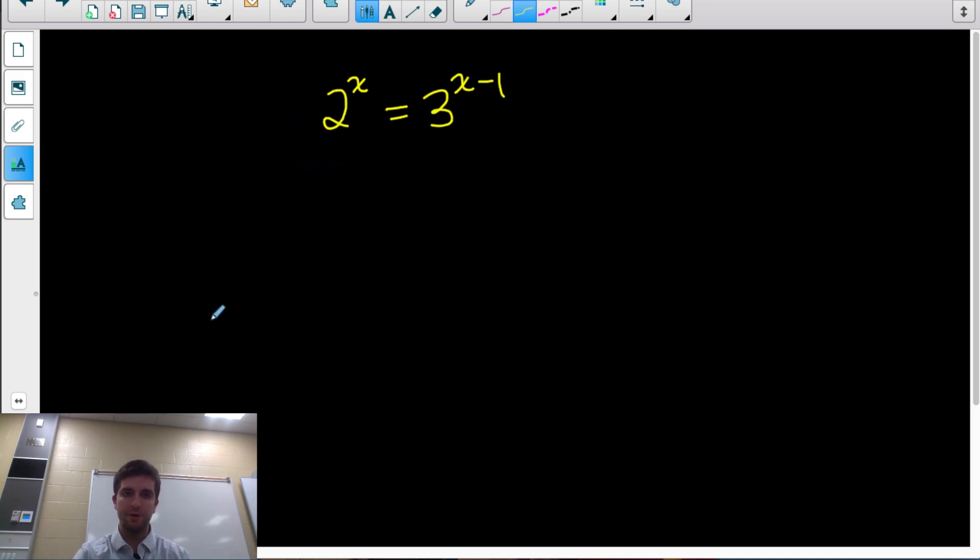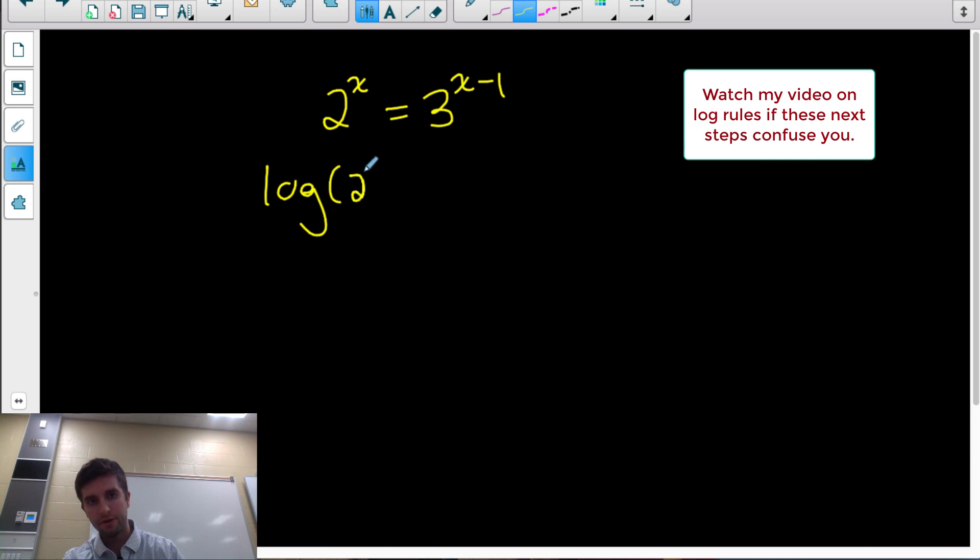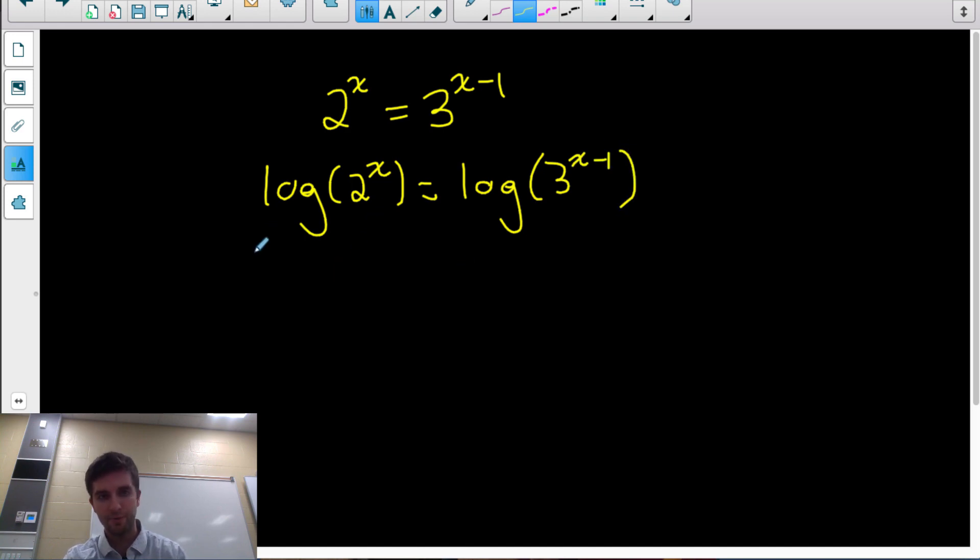Okay, let's do a more complicated one. Why is this one more complicated? Well, we can't do what we did for the last one. I can't rewrite 3 as a base 2 power, or not easily anyway. So when that happens, when you can't rewrite the powers to have the same base, what we're going to want to do is start using our log rules. We're going to want to take the log of both sides of the equation. So log of 2^x equals log of 3^(x-1). As long as we do the same thing to both sides, we can do whatever we want. This equation is still true, still balanced.